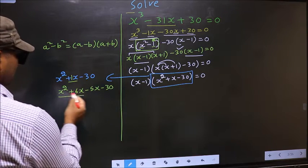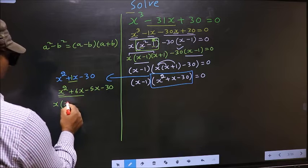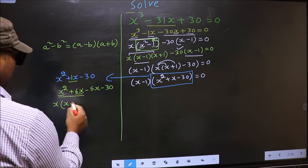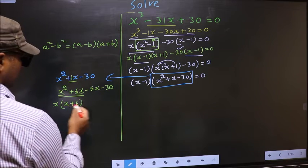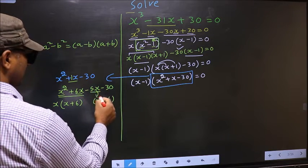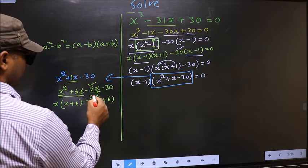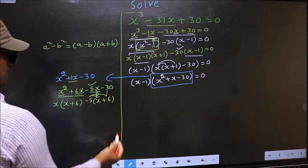Now from these two terms what can be taken out common: x. So here you get x plus, from this x out you get 6. Now whatever you got here, here also you should get the same thing. Now from this, x has gone inside so outside you get minus 5.